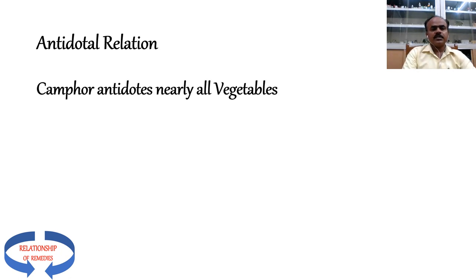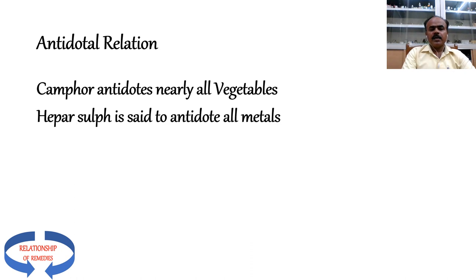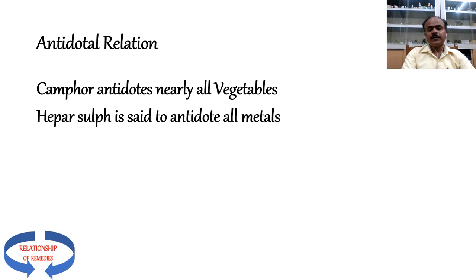Examples of antidotal relations: Camphor is considered a universal antidote and antidotes nearly all vegetable remedies; Hepar Sulph antidotes almost all metals; Coffee is also used to antidote many actions. As a personal example, I had given Rhus Tox to a friend for respiratory complaints, and she subsequently developed knee joint pain and stiffness. I asked her to drink coffee, and soon after she took coffee, her knee joint relaxed and the pain reduced. However, each drug has its own specific antidotes.